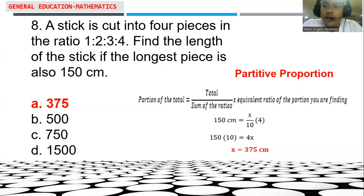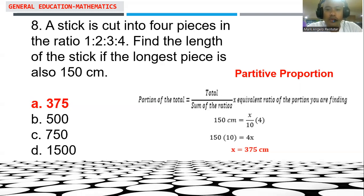The problem: a stick is cut into 4 pieces in the ratio 1 is to 2 is to 3 is to 4. Find the total length of the stick if the longest piece is 150 centimeters. The ratio is 1:2:3:4, where 1 is the shortest and 4 is the longest. So 4 represents the 150 centimeter piece.